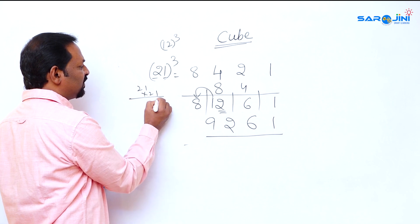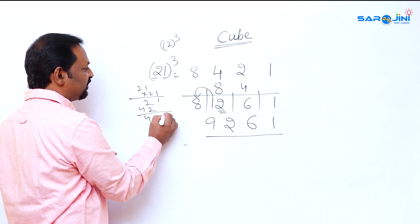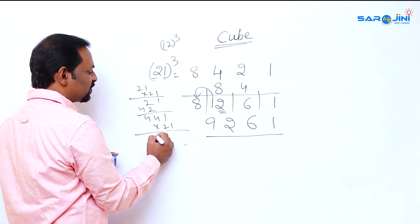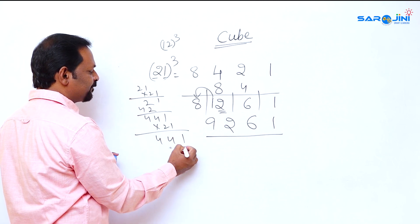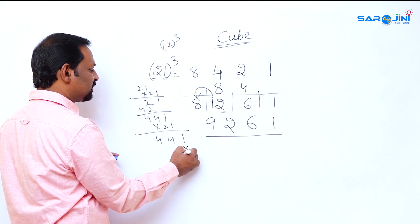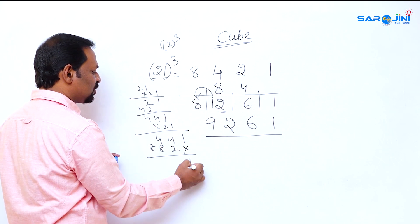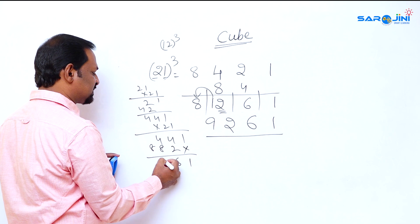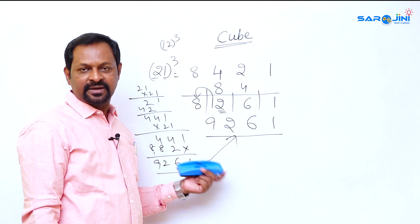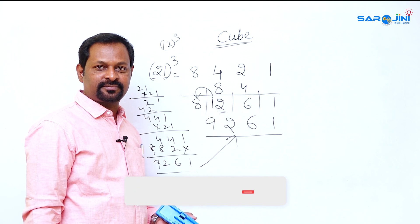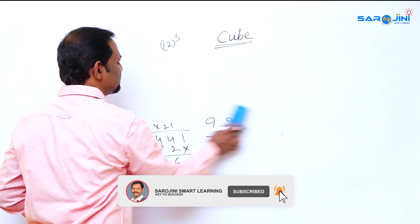Let's verify: 21 × 21 = 441, and 441 × 21 = 9261. Yes, 9261 is the correct answer for 21 cubed.